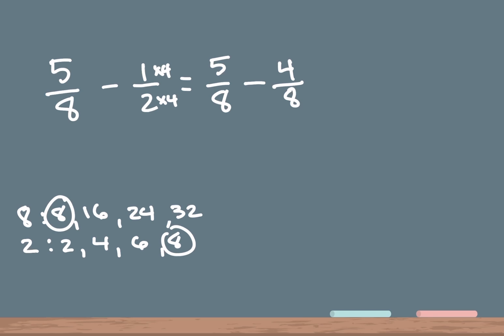Now the easy part — just take the top numbers and subtract. So 5 minus 4 is 1, and the bottom number always stays the same, so it's going to be 8. Our answer to this problem is 1 over 8. You can also simplify your answer, but in this case it's already in its simplest form: 1 over 8.